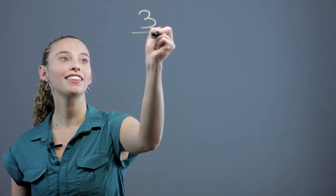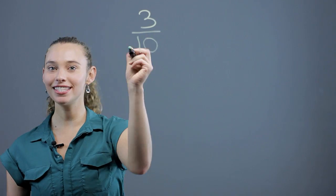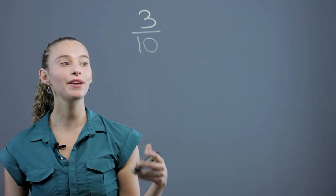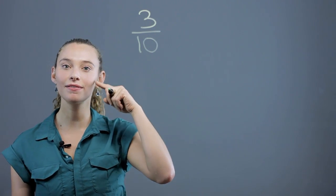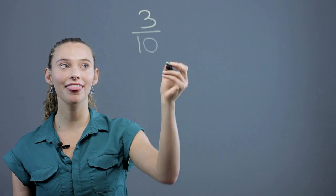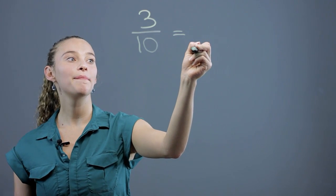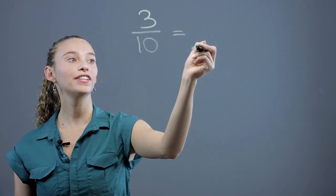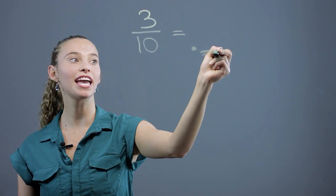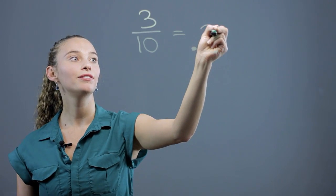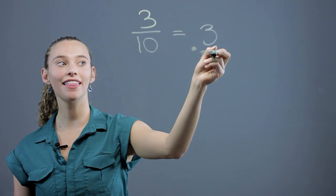If we have a number like 3 over 10, that's it written as a fraction. And if we want to think of it as a decimal, we can say that's 3 tenths. The first digit after the decimal is the tenths place, so we're just going to write .3 — that's 3 tenths.